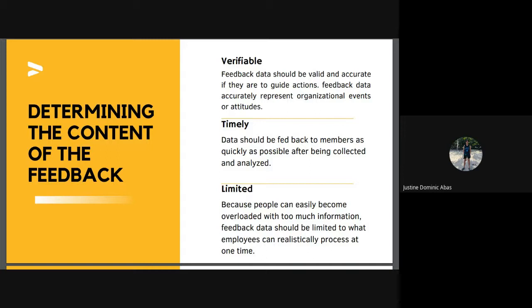Fourth, verifiable: feedback data should be valid and accurate to guide action, allowing organization members to verify whether the data accurately represent organizational events or attitudes — for example, questionnaire data might include information about the sample of respondents and frequency distributions for each item. Fifth, timely: data should be fed back to members as quickly as possible after being collected and analyzed, ensuring the information is still valid and linked to members' motivations to examine it. Sixth, limited: people can easily become overloaded with too much information, so feedback data should be limited to what employees can realistically process at one time.